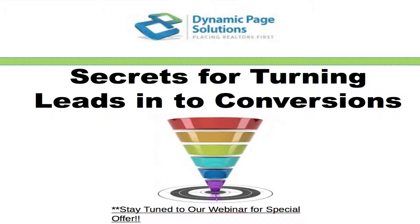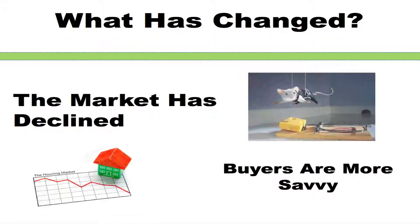Now if you've been in the real estate industry for any length of time, you know it's been a rough several years for the market and it's affected nearly every city in every state in the nation. Along with the tough times that agents and brokers have experienced, home buyers have begun evolving and responding to the declining market and to the changes in technology. Home buyers are smarter than ever before and certainly more tech savvy, thanks to the internet. This has presented a unique challenge to agents because real estate leads have become less loyal and more demanding, and conversions can be really tough to make.